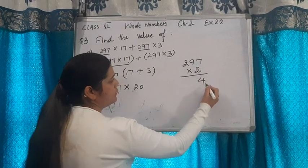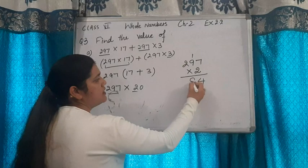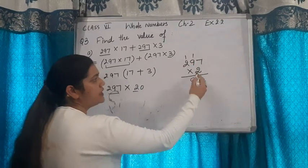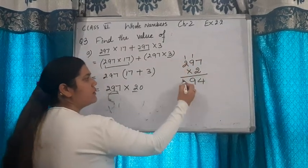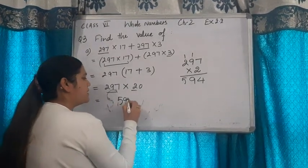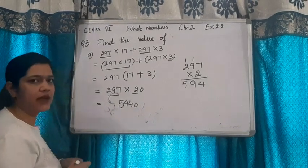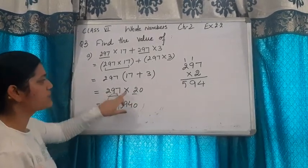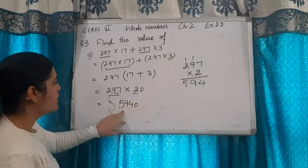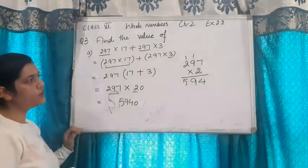2 sevens are 14, 1 carry. 2 nines are 18 and 1, 19, 9 carry. 2 twos are 4 and 1, 5. The answer is 594, 1 zero. Zero because we multiplied by 20. When we multiply 297 by 20, we get 5940.